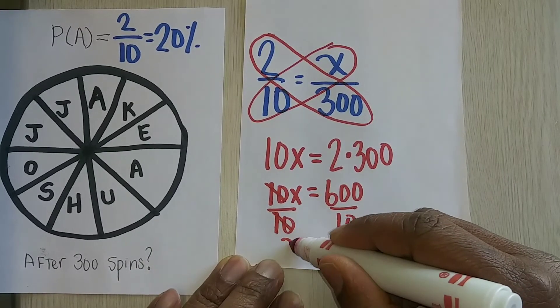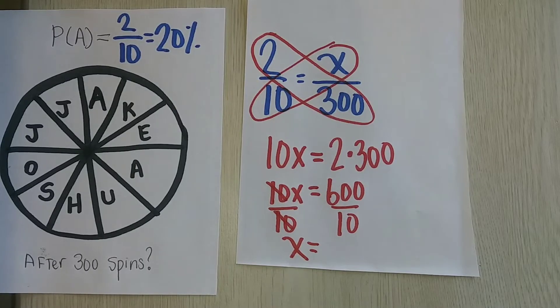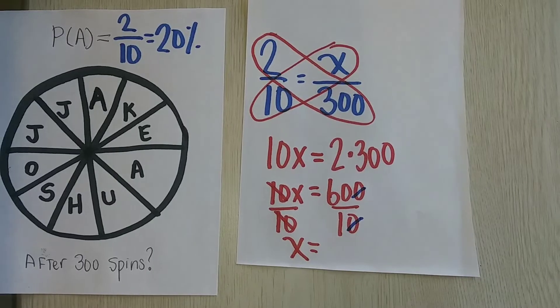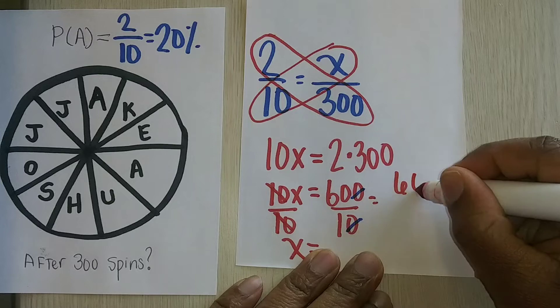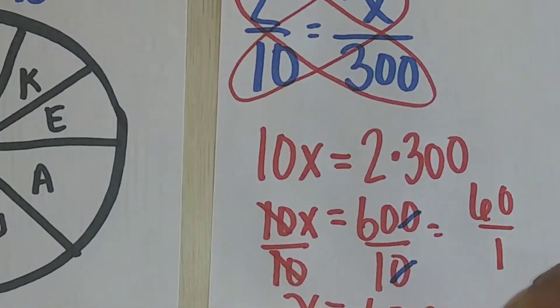10 divided by 10 is 1, so I'm left with X. Now, when it comes to this, I can simplify by getting rid of these two zeros here, and I'll be left with 60 divided by 1. And 60 divided by 1 is just simply 60.